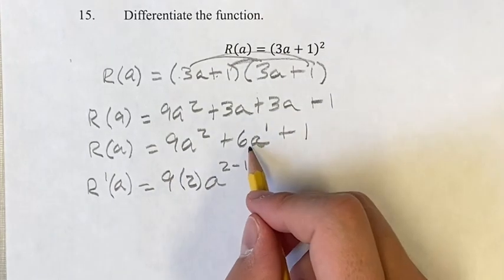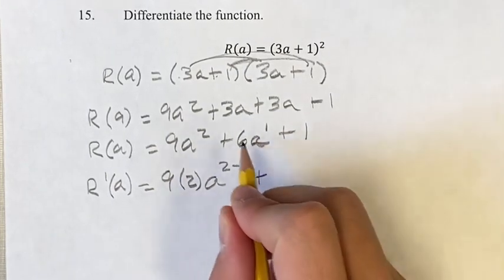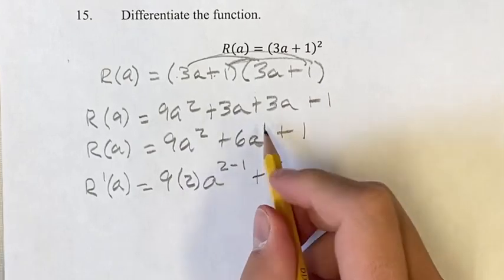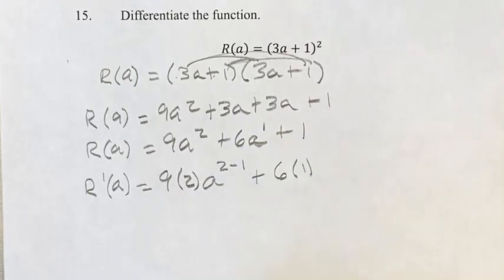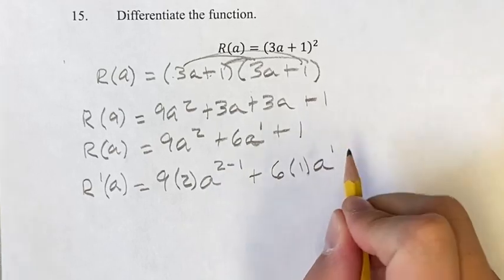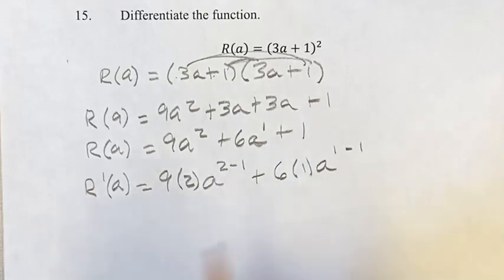Same thing here. Think of a as a¹, so we bring out the 6 first, bring the exponent down times 1 times a to the (1 minus 1).